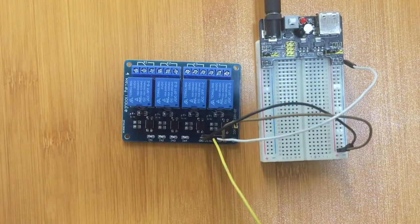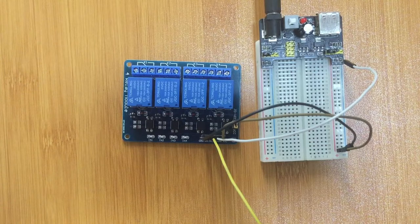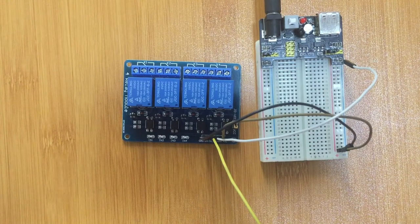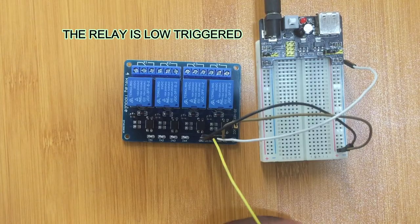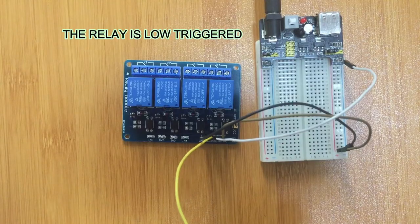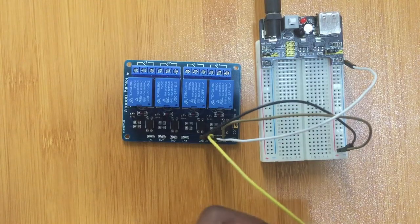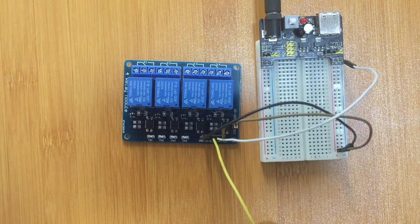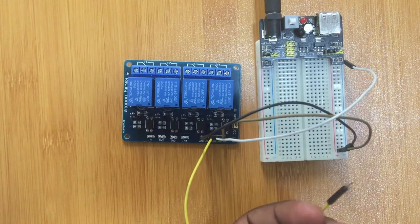An aspect of this relay that is important to note is that the relay is low triggered. By low trigger I mean it is turned on by a low signal or low voltage which is zero voltage, and it is turned off by high signal, or in this case we are using five volts.